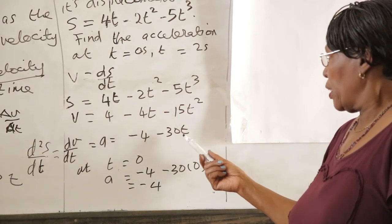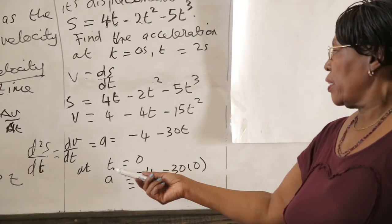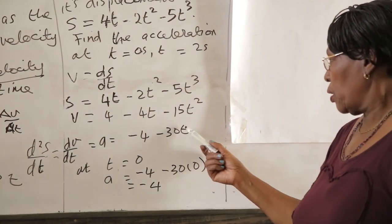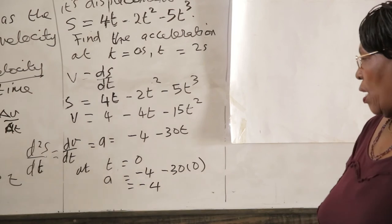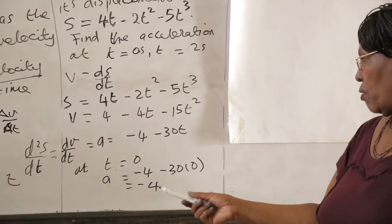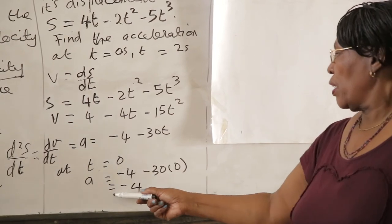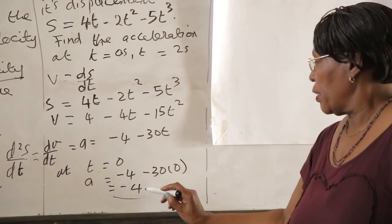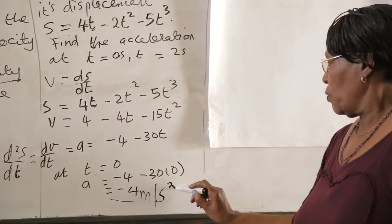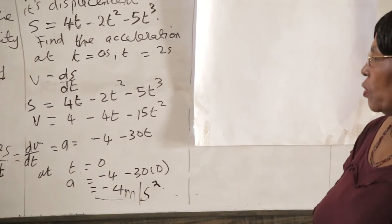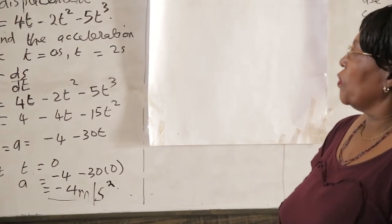Which gives us at t is equal to 0, A is equal to, we substitute t is equal to 0, it is equal to minus 4 minus 30 times 0, giving us -4 meters per second squared. So that is the acceleration at t is equal to 0.